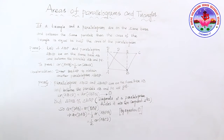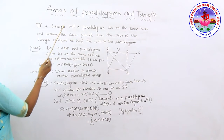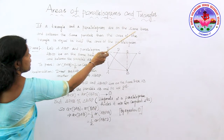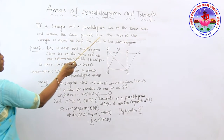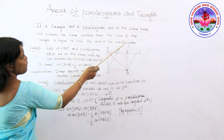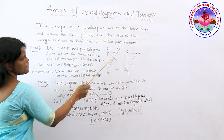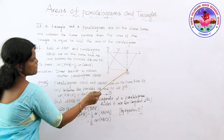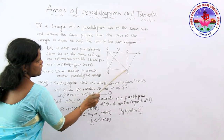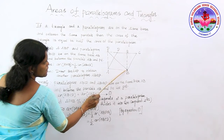Now we are going to see the next theorem: if a triangle and a parallelogram are on the same base and between the same parallels, then the area of the triangle is equal to half of the area of the parallelogram. A figure is given where ABCD is a parallelogram and APB is a triangle, both sharing the same base AB.